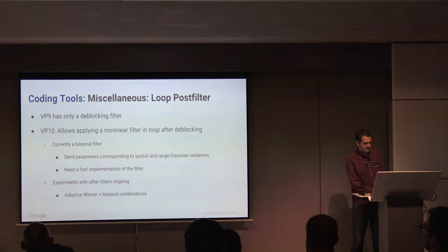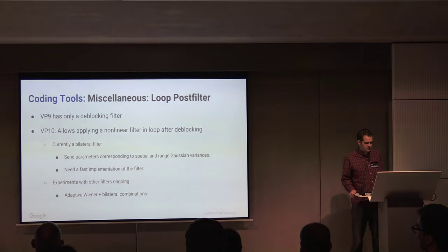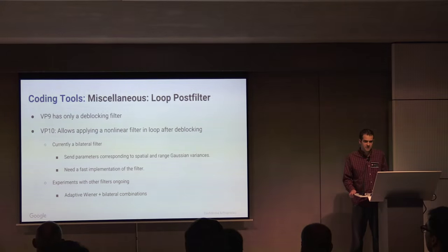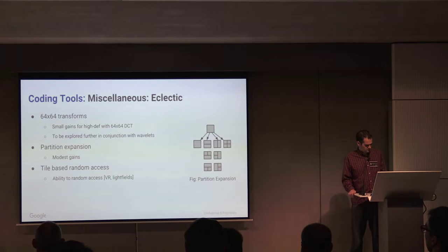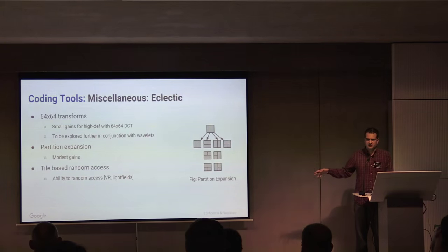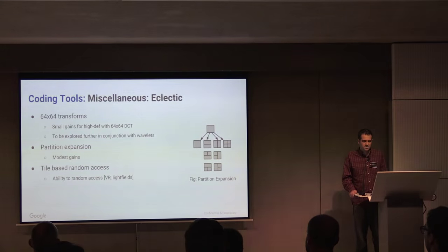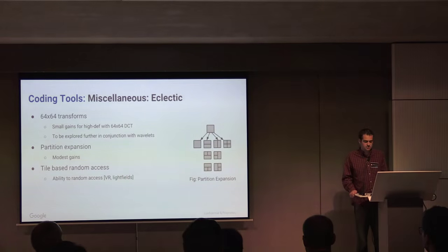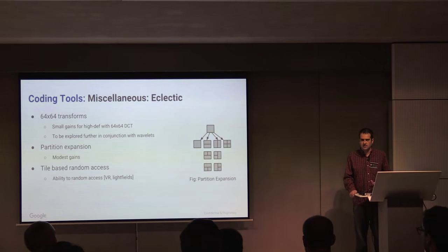VP9 has a de-blocking filter; VP10 has a new non-linear loop filter that can be used after de-blocking. It's currently a bilateral filter, with experiments ongoing for adaptive Wiener filters. Beyond wedge partition expansion, we now have T-shaped partitions where you can have one big section on one side but go down smaller on the other side, though these only get fairly modest gains. Most of the tools we have get modest gains, but if you add enough of them up you can get substantial gains overall. We also have support for much smaller tiles and random access tile support, which have advantages for VR and light field applications.